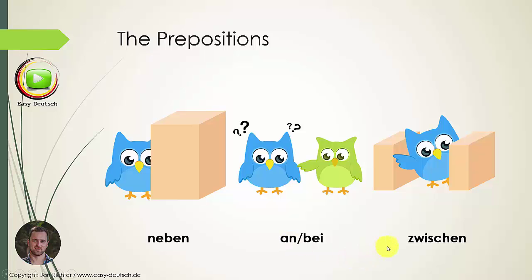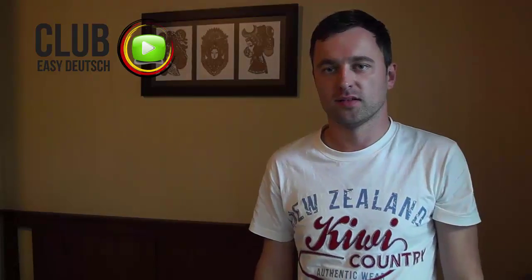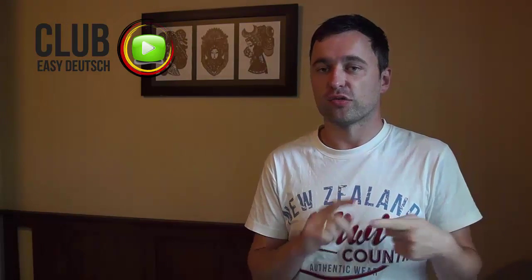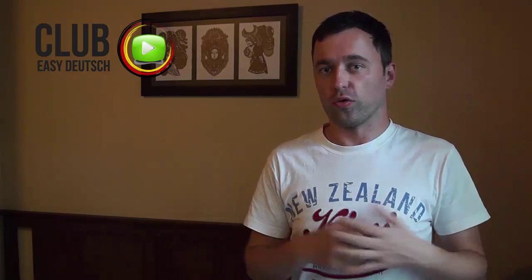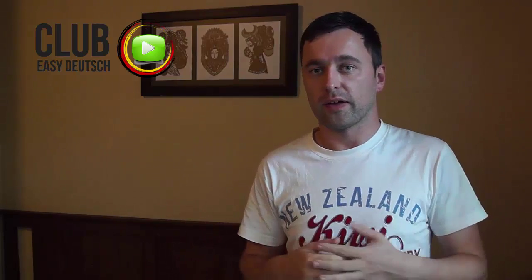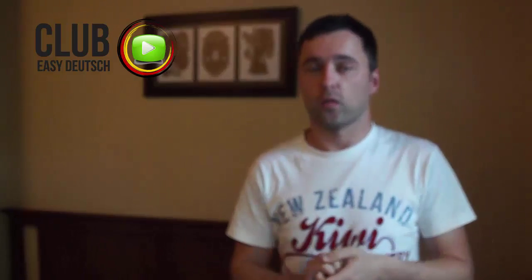The last preposition is zwischen, meaning 'in between.' The bird is in between two stones — I think it's quite obvious with the pictures. Those are all the prepositions you can use to answer the question wo. They work pretty much like in English — the only exception is an and bei, which both mean close to somebody or something. Everything else works 100% the same as in English, and they always use dative case when you ask wo.